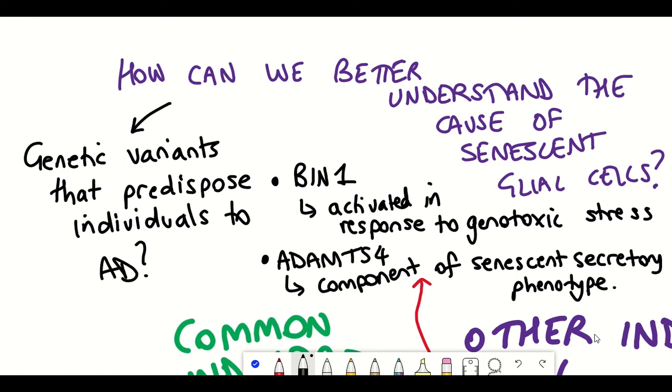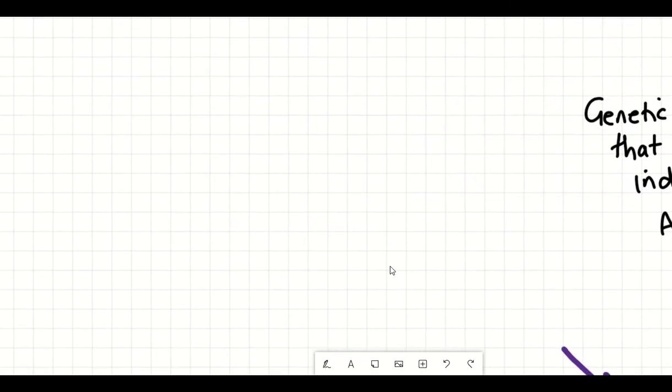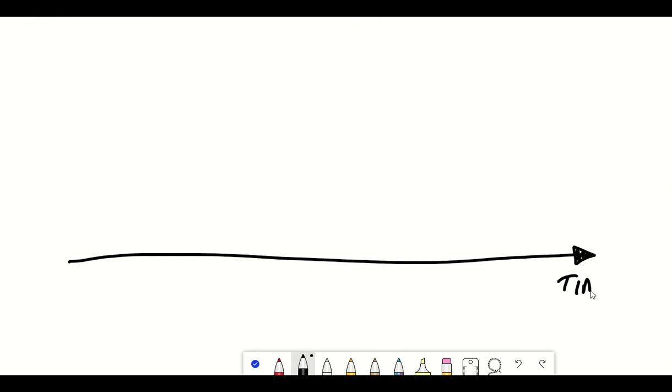It's possible that individuals carrying variants in these two genes have a higher risk of Alzheimer's disease potentially due to some interaction of these genes with senescence development.